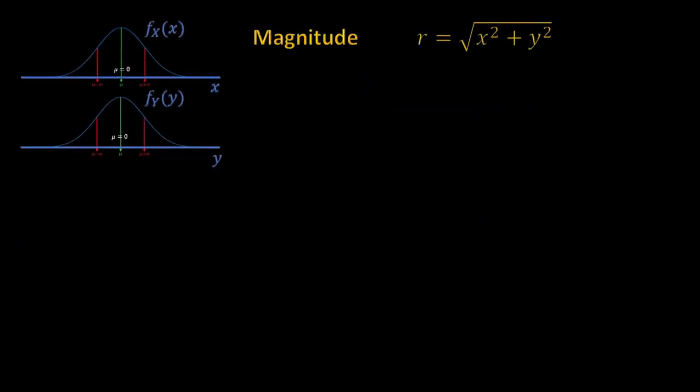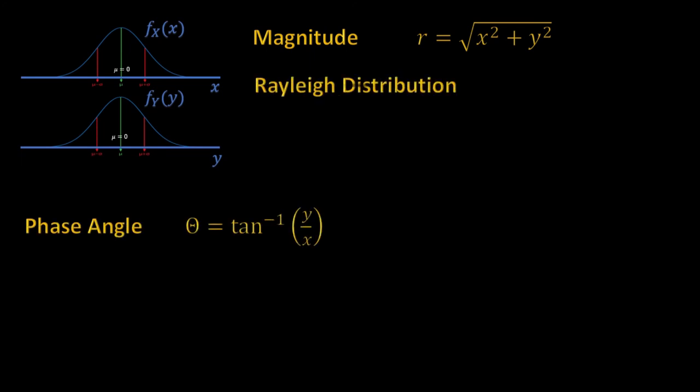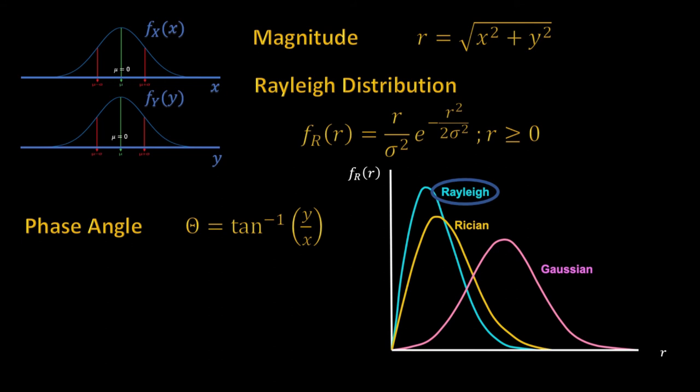Now if x and y are Gaussian distributed, as in our case, then the magnitude has a Rayleigh distribution. That is, it is having a PDF which is given by this expression, where r is a random variable and sigma is a standard deviation. Now, plotting the PDF with respect to the positive values of r, we have the following plot. Note that the phase angle is uniformly distributed from 0 to 2π.